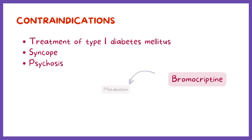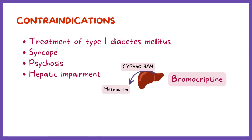Bromocriptine metabolism occurs primarily in the liver via the cytochrome P450 3A4 enzymes, and should be avoided in anyone with hepatic impairment.